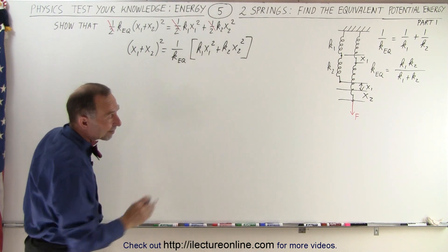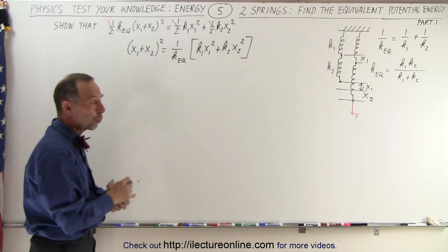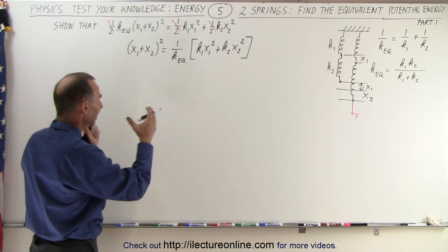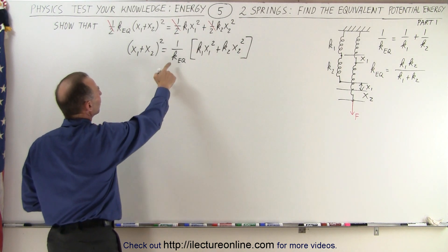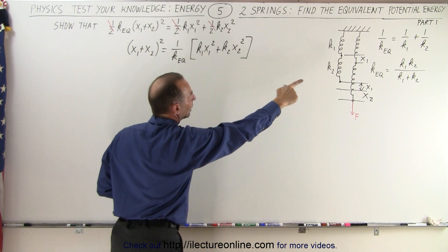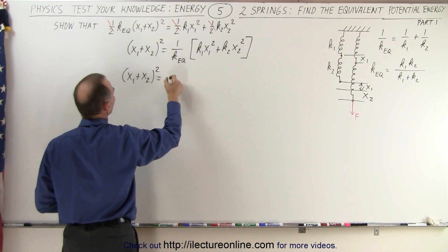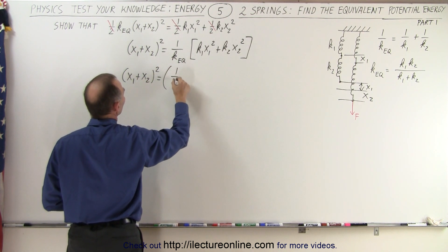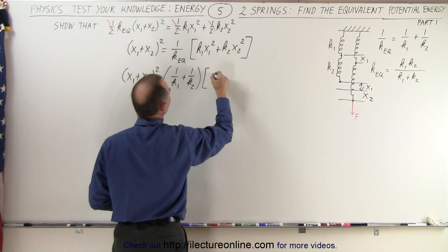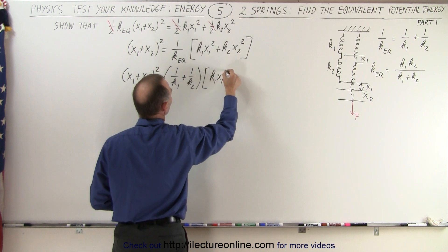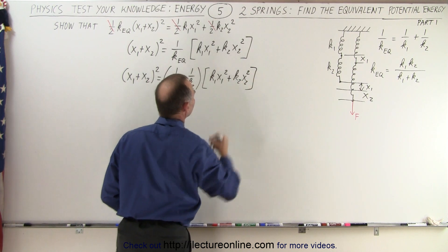Notice this is part one — I think I'll need at least two videos to go through the whole process, so let's take it one step at a time. The next thing we do is substitute for 1 over k_equivalent, so we write that (x1 + x2)² equals (1/k1 + 1/k2) multiplied by (k1·x1² + k2·x2²).